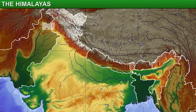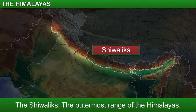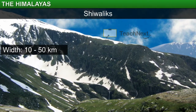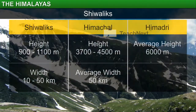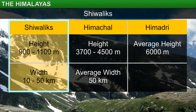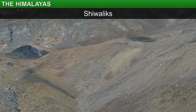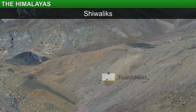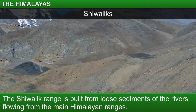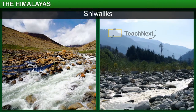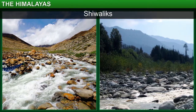The range south of the Himachal, that is, the outermost range of the Himalayas, is the Shivalik range. The Shivaliks are 10 to 50 kilometers wide. The heights of these mountains range from 900 to 1,100 meters. Thus, the Shivaliks form the lowest range of the Himalayas. This is because this range is built from loose sediments brought down by the rivers flowing from the main Himalayan ranges located up north. The sediment consists of broken stones and soil. Therefore, the valleys of the Shivalik region are covered with thick gravel and alluvium.